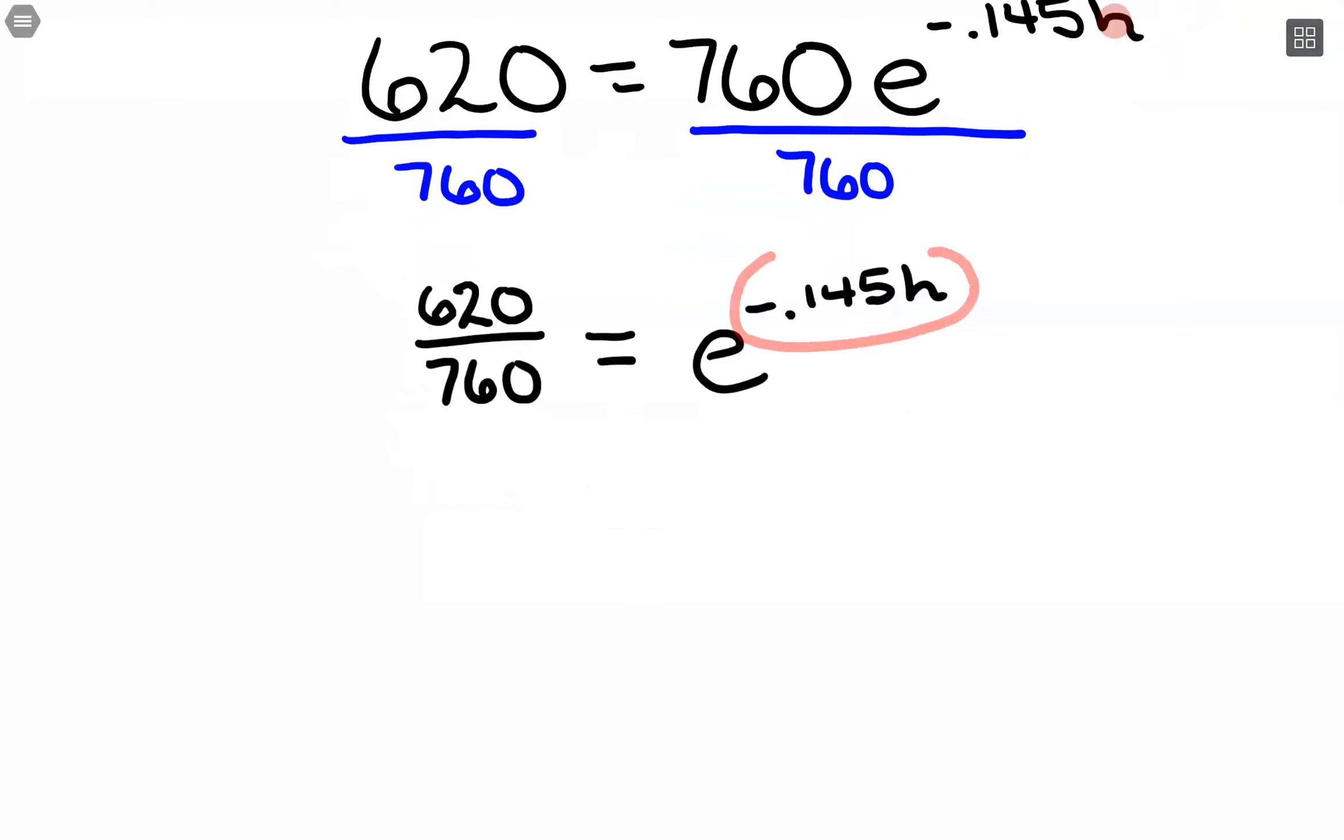We're solving for our exponent. So I'm going to put that on one side of the equation. So negative 0.145h equals a logarithm base e. So I'm a natural logarithm of, and then that value, 620 over 760.